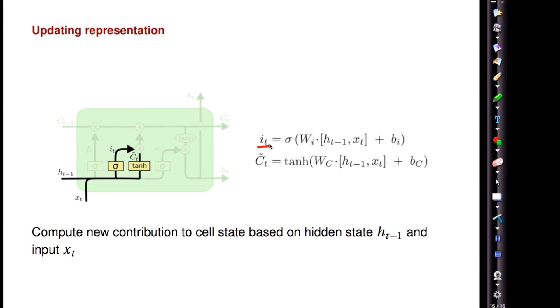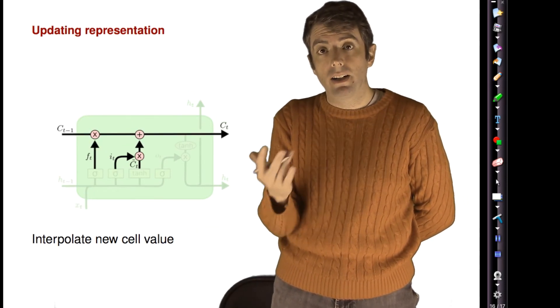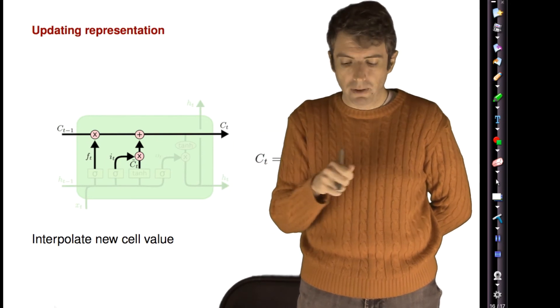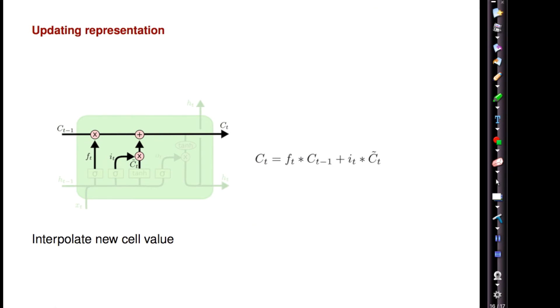One is the strength - how much is it going to contribute? And then you also have what you're going to contribute. Now you have something very much like the RNN. You have this interpolation between the current state and the previous state. The f says how much your previous state is going to contribute. Your i says how much your current contribution is going to contribute to the new hidden state representation.